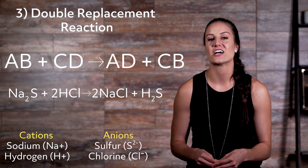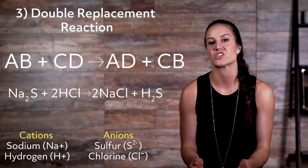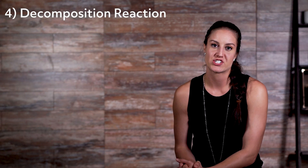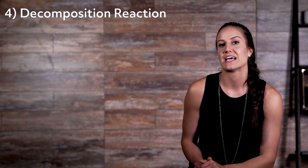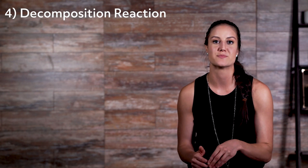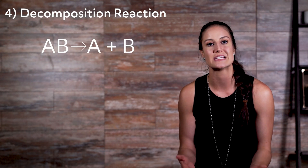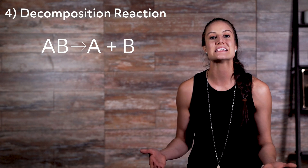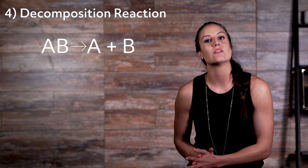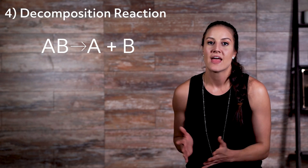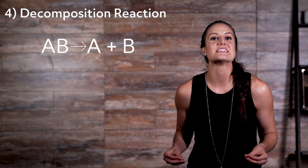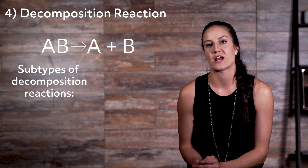The cations and anions switch places during the reaction to form new compounds. Number four: decomposition reaction. Decomposition and composition are opposites. In a decomposition reaction, a single complex compound is broken down, or decomposed, into a more basic substance. Here is what that looks like as an equation: AB yields A + B. Now, there are actually three different subtypes of decomposition reactions.